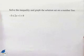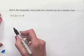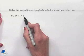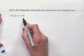Now let's look at a compound inequality. Solve the inequality and graph the solution set on a number line. Here we have -3 ≤ 2x + 1 < 6. Recall that in a compound inequality we have three parts. Whatever we do to one part, we'll do to all three.